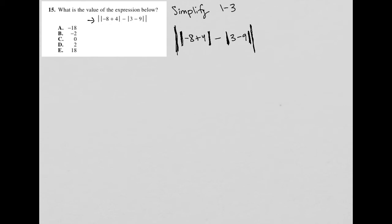Let's simplify this by dealing with what's inside each of these absolute values first. Negative eight plus four is negative four. And then three minus nine is negative six, so I'd have the absolute value of negative six.